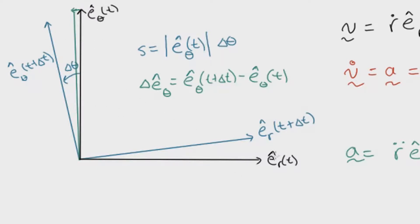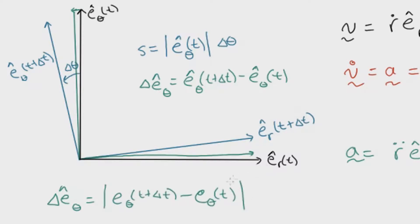That very small vector is going to point towards the left. If we define our orientation and let delta theta get very close to zero, then e_r at t plus delta t gets closer and closer to e_r at t. So the change in e_theta, as it approaches zero, points horizontally to the left — in the opposite direction of the unit vector e_r. Therefore, the change of the unit vector with respect to theta equals the magnitude of the difference times the negative of e_r.